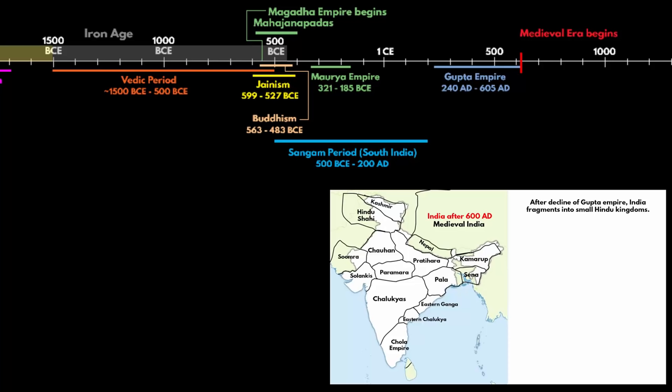Have a look at this picture — this is what India looked like in the year 1080. The Gupta empire had disintegrated into multiple Hindu kingdoms.